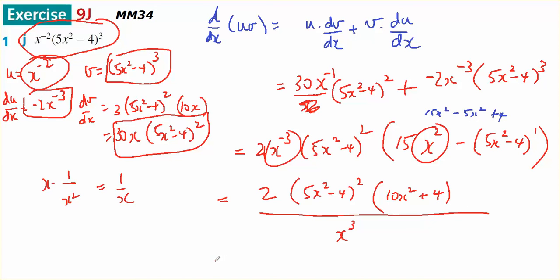I've noticed I've got a common factor in there of 2. So, 4 over x cubed, 5x squared minus 4 squared, 5x squared plus 2, all over x cubed.